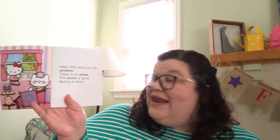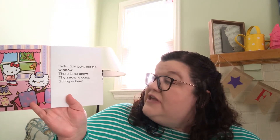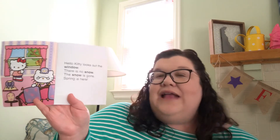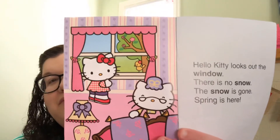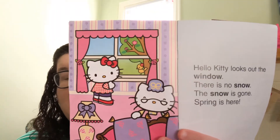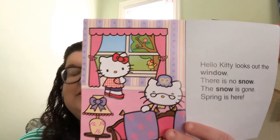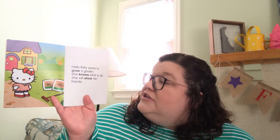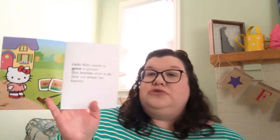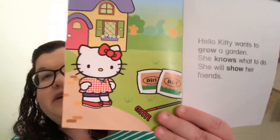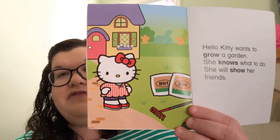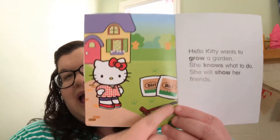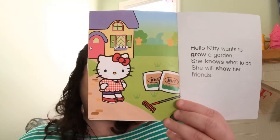Hello Kitty looked out the window. There is no snow — the snow is gone and spring is here. It is springtime, it's not cold anymore, it is ready to plant some things. Hello Kitty wants to grow a garden. She knows what she will do — she will show her friends. Outside she's got some equipment: some bags of dirt and a rake to help her plant her garden.